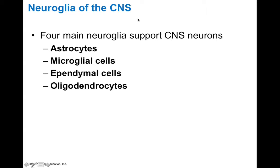In terms of the types of neuroglia cells, we have four major types: astrocytes, microglia, ependymal cells, and oligodendrocytes. These are the ones found in the central nervous system. We actually have a separate set of glial cells in the peripheral nervous system, because these two divisions of the nervous system develop in different ways, so you find different cell types between them.